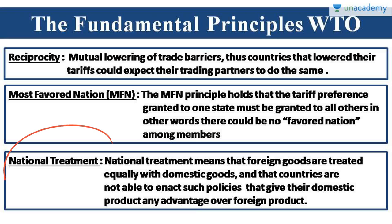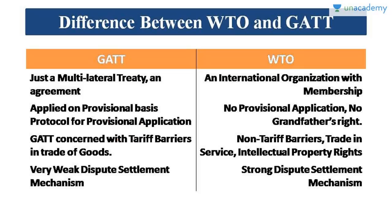The third principle is national treatment — a country cannot discriminate between imported goods and domestic goods. If there are two goods in a country, one imported and one manufactured domestically, the government has to treat both equally. When a good has finally entered the national boundary of a country, it should be treated as a domestically produced good. Both the imported and the domestically produced good have to be treated equally — that is national treatment.